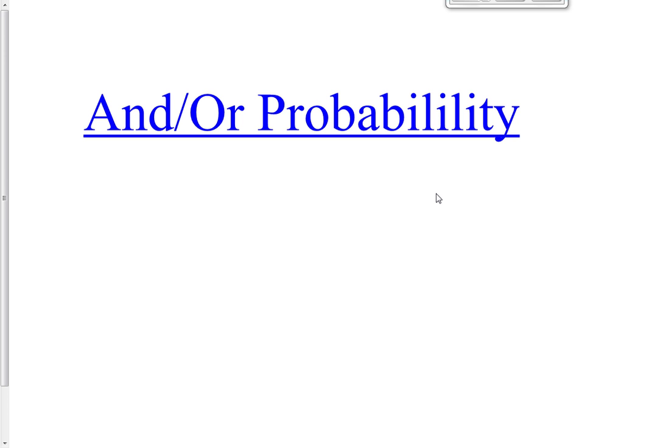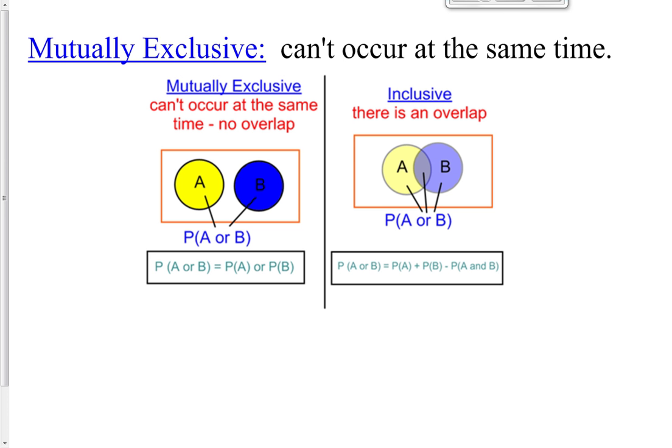Hi class. Welcome to our next lesson on 12-4, which is AND and OR probabilities. We've been doing some simple probability for the first three lessons. It's going to get a little bit more complicated here, but still nothing too bad just yet. We've got to talk about what mutually exclusive means.